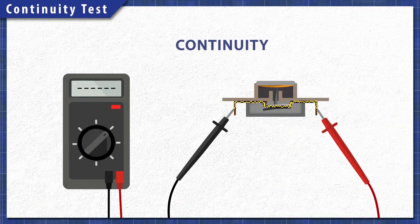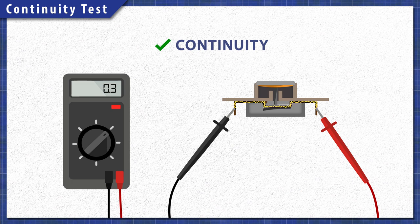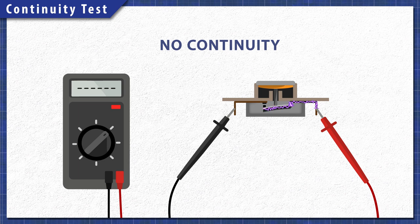The switch can be tested for continuity with a multimeter. A continuity test will determine if there's a continuous path for electricity to flow through.